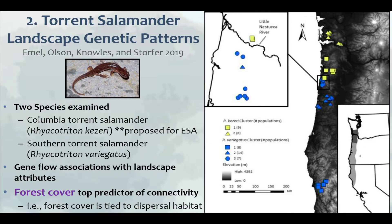We did similar work with torrent salamanders, recently published. We examined two torrent salamander species in the coast range, looking at their genetics across the landscape. For torrent salamanders we saw a very strong signature of forest cover as a predictor of genetic connectivity. Dispersal was highly related to forest cover, so for this headwater-associated species the bottom line is: retain forest cover for over-ridge connections.